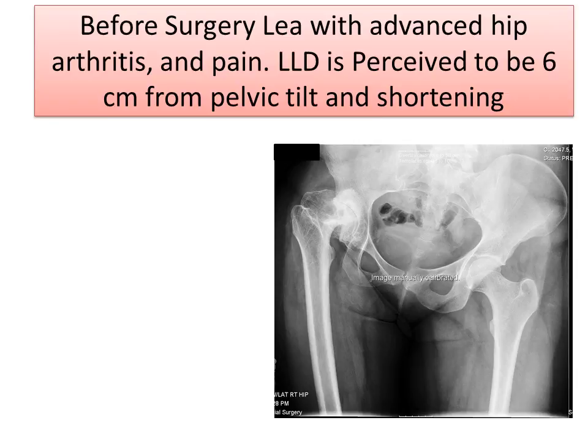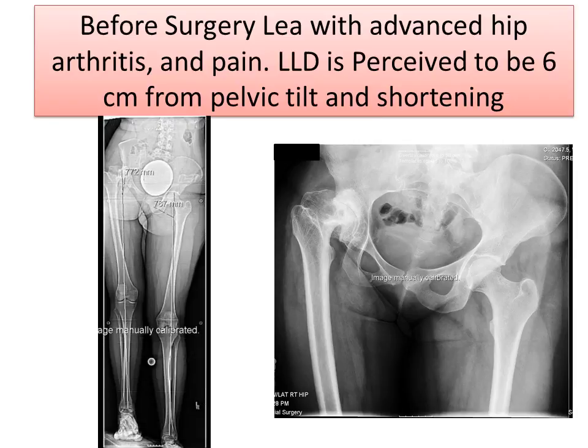Before surgery, Leah had advanced arthritis of the right hip and pain, and the leg length discrepancy was perceived to be 6 centimeters — mostly from pelvic tilt and shortening. If you notice on the long x-ray, you can see how the pelvis is quite tilted, and it creates a large perceived leg length discrepancy, associated with the deformity and the contracture of the hip.